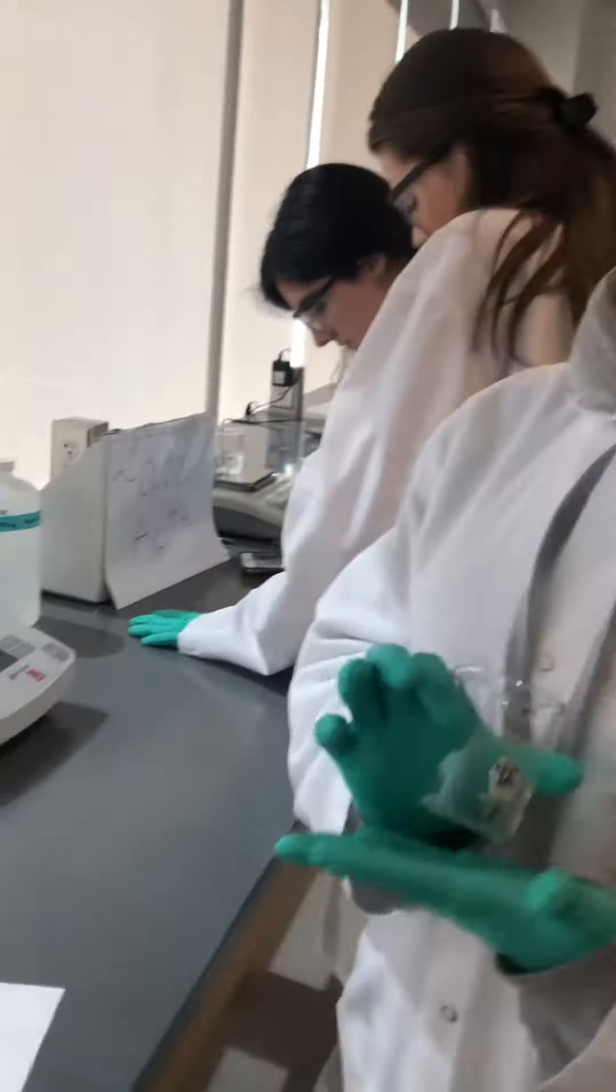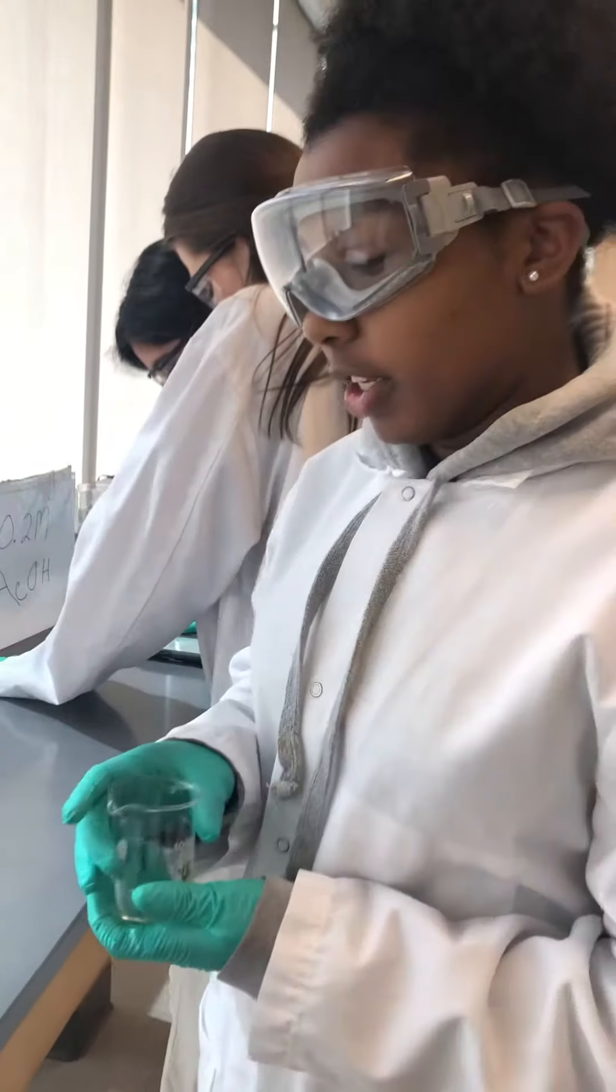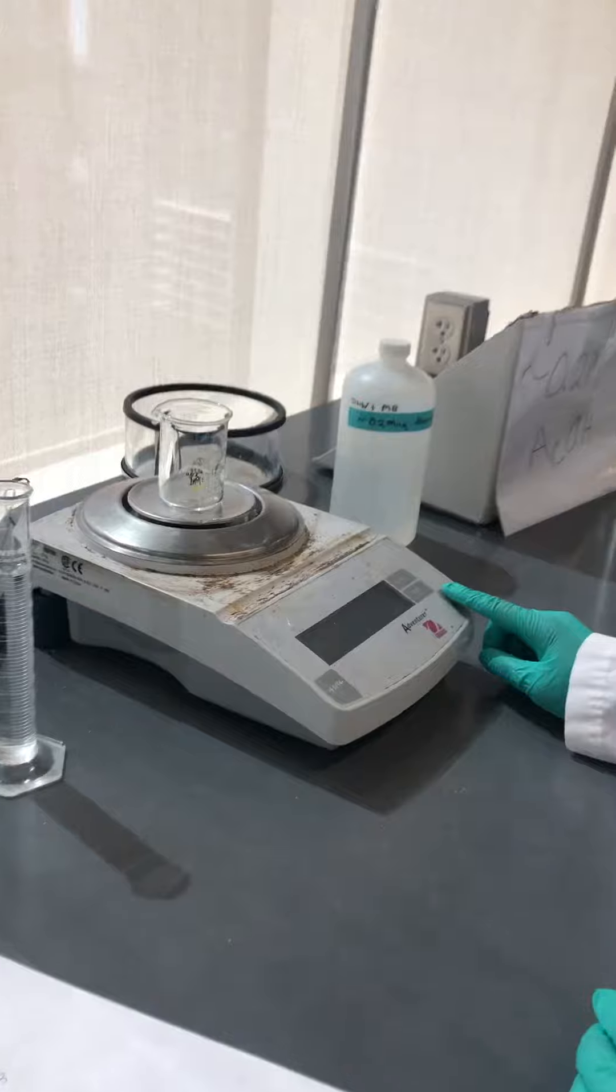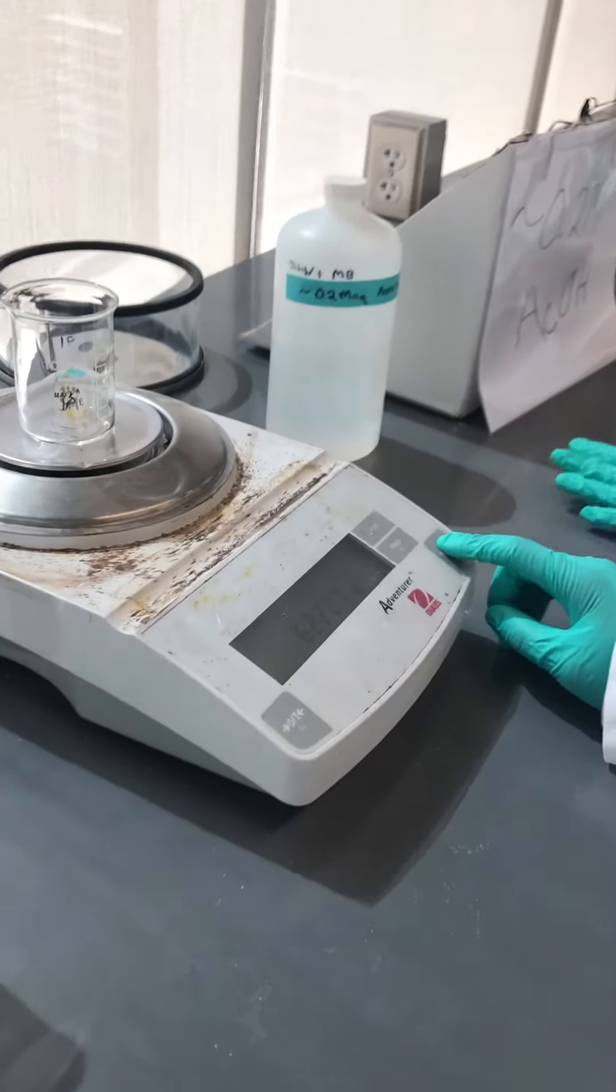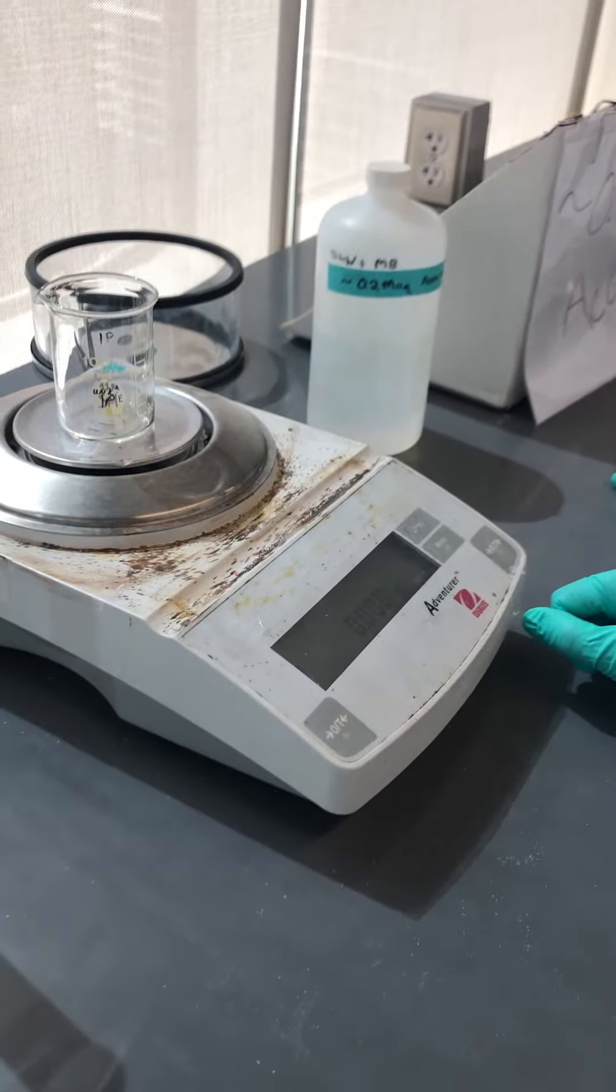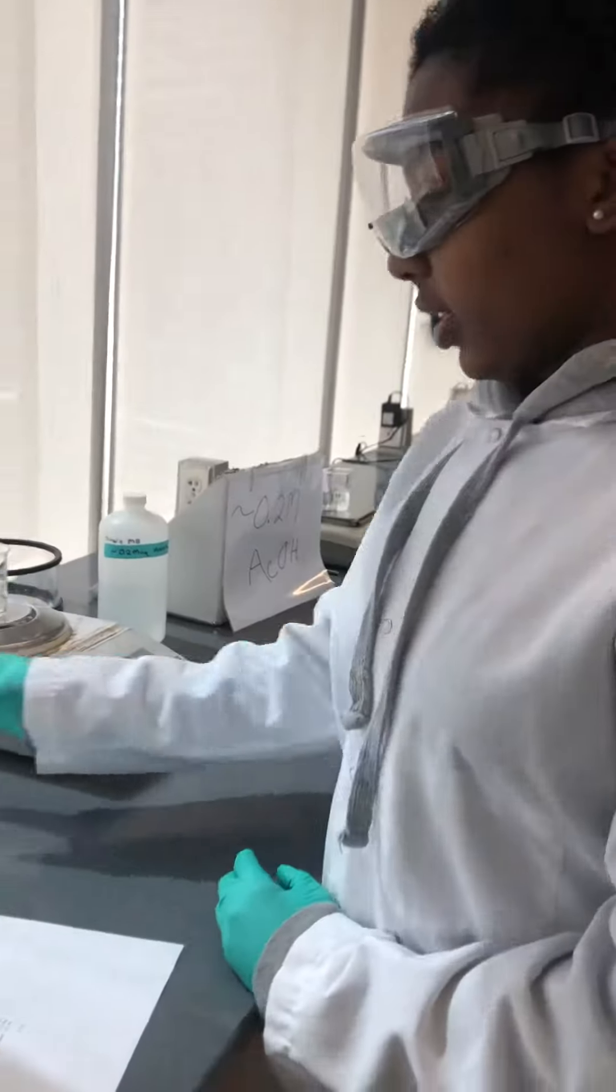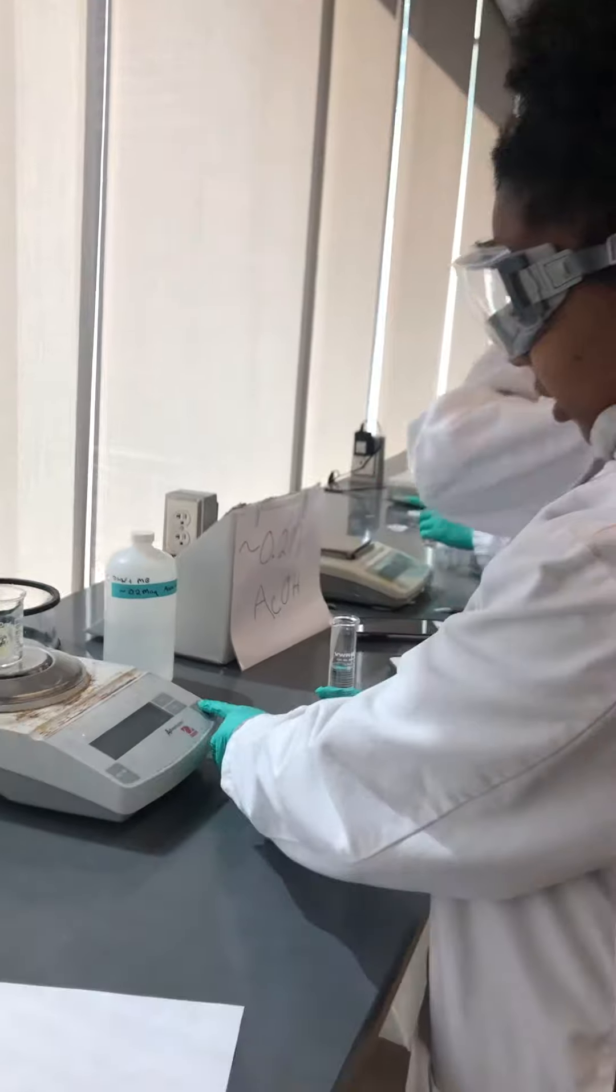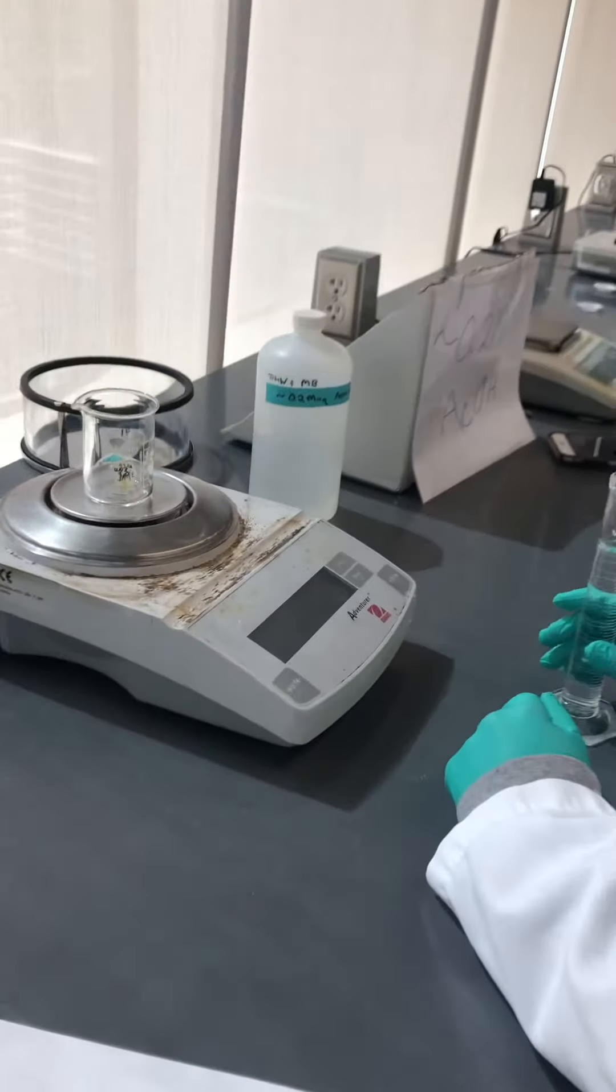So then we're going to put our empty beaker that we want to transfer the water into. We're also going to tare this, so that we can just add straight 50 and we'll get back the mass. Once it's tared, that's when you can add the water.